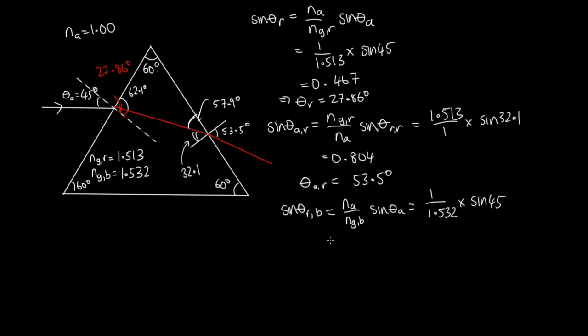And so this is giving us 0.462. And so theta is equal to 27.48 degrees. So here we had 27.86. This is a slightly smaller angle. So we can see that the blue light is going to go a bit more in this direction. We can then draw the normal here.